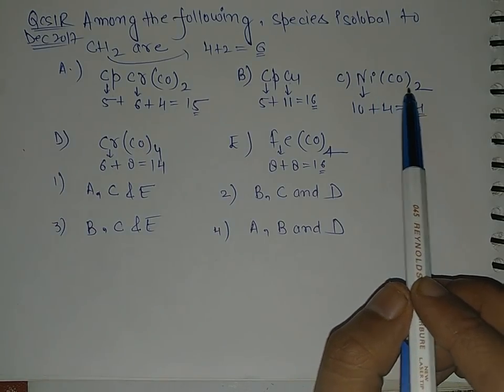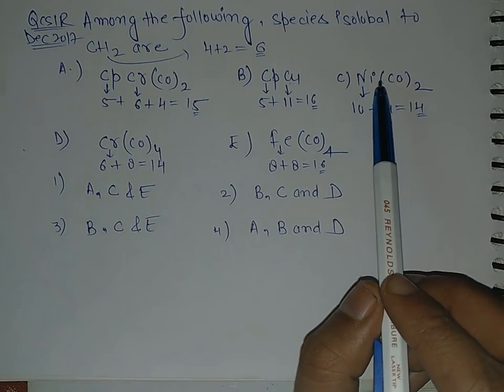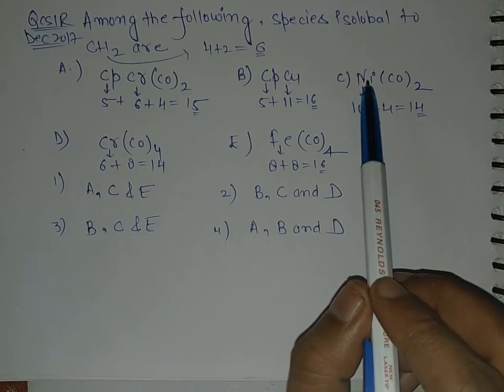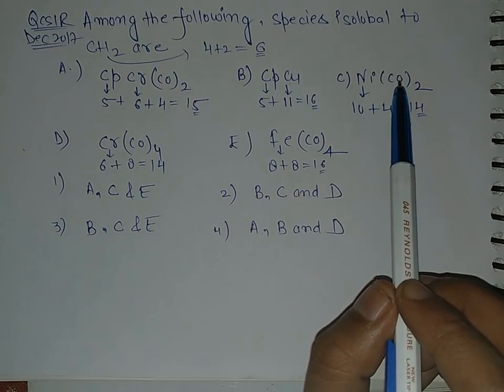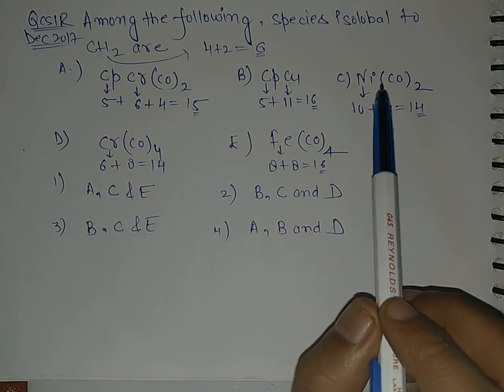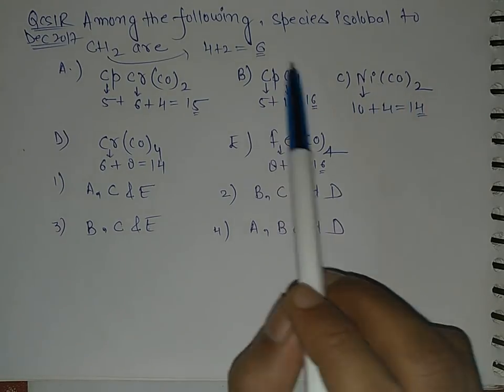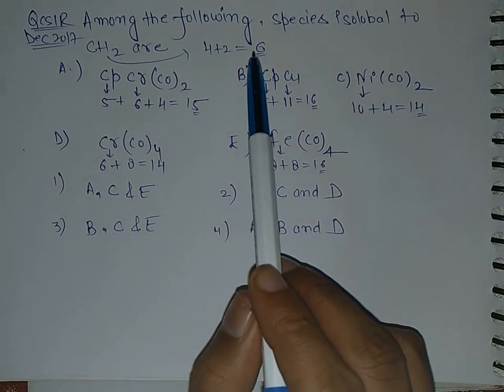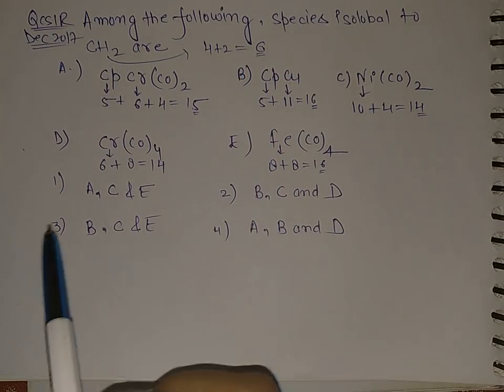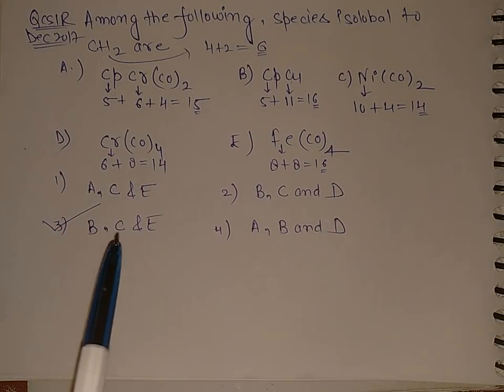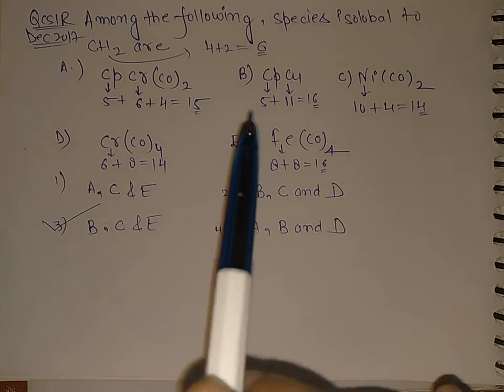There are two carbonyls and nickel has 10 electrons. So if 4 electrons go in pi backbonding to the pi star of this carbonyl ligand, then we are left with 6 electrons. Then the 6 electron will be isolobal to this CH2 fragment. So the answer will be third if there is an answer key having answer of this question.